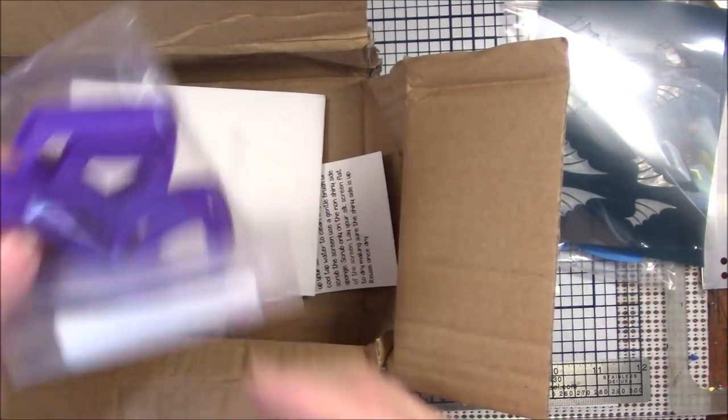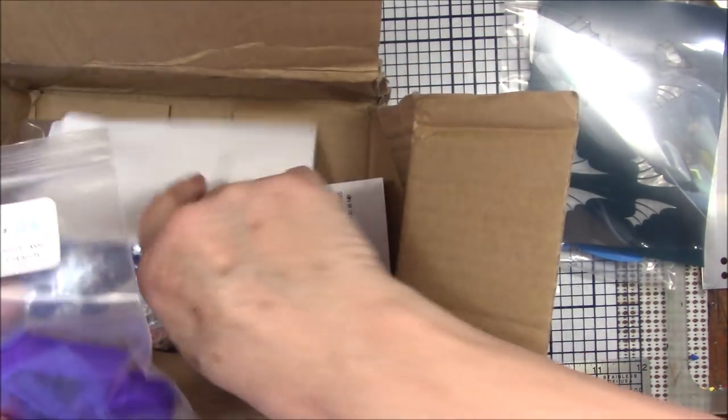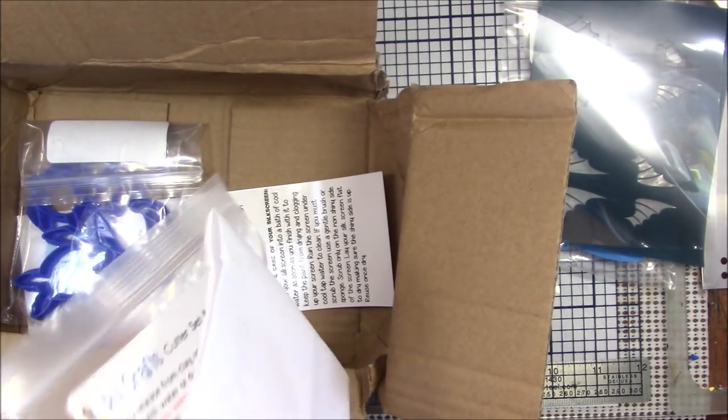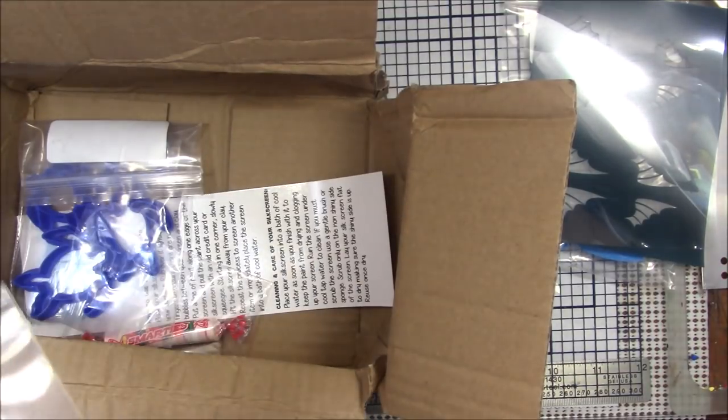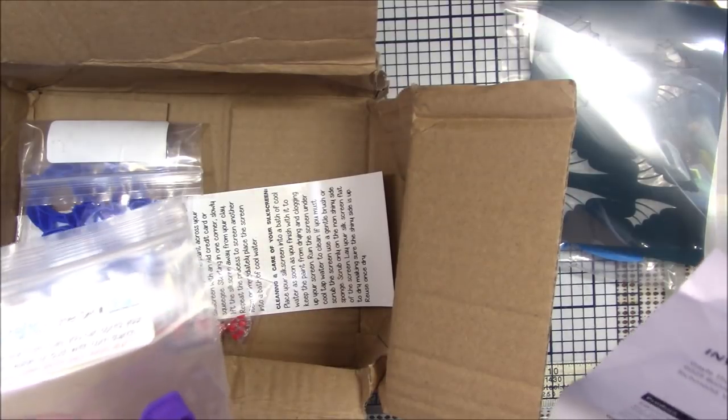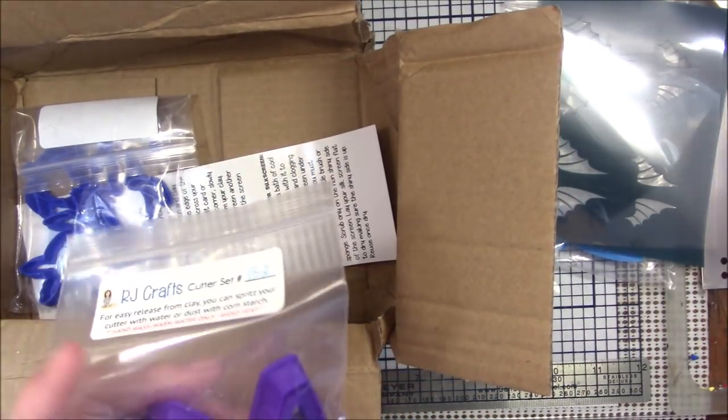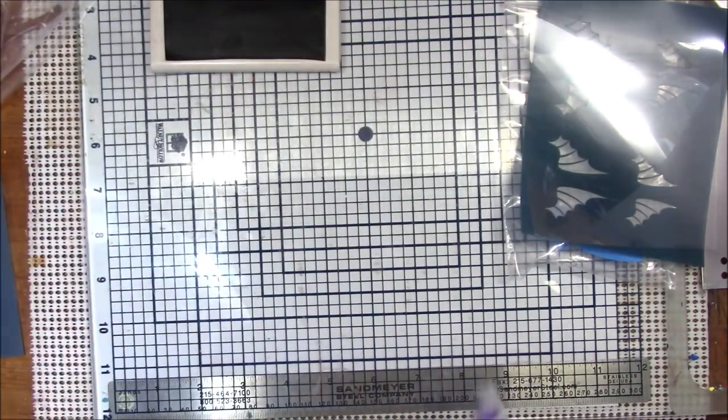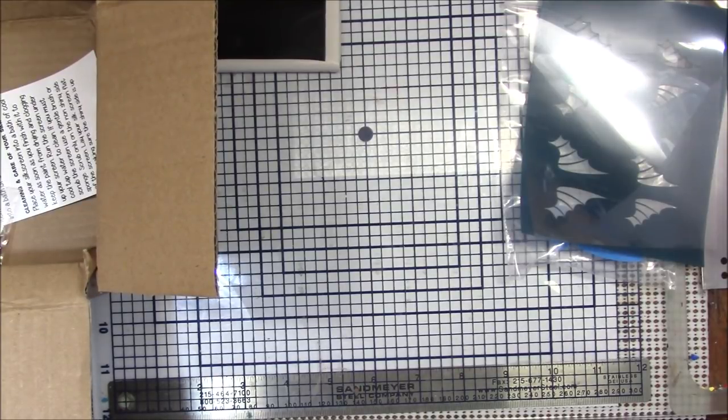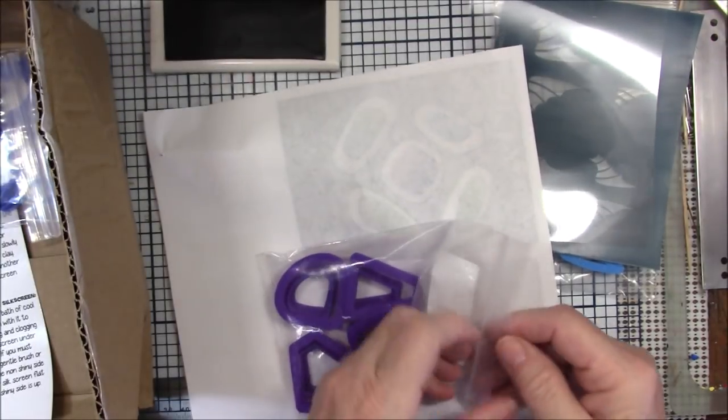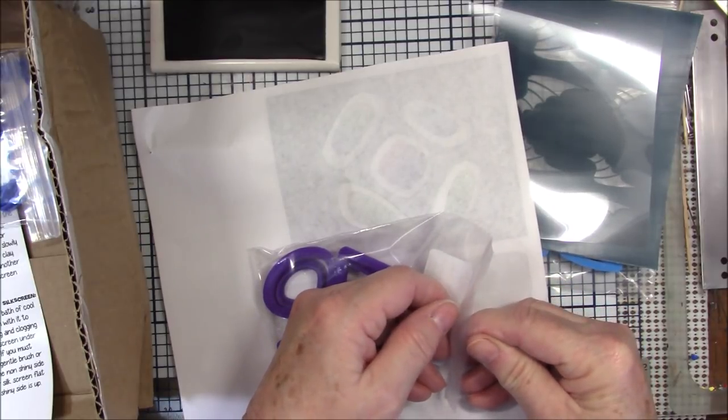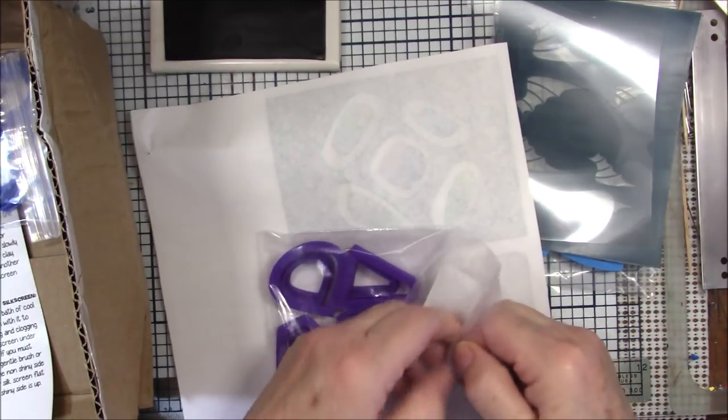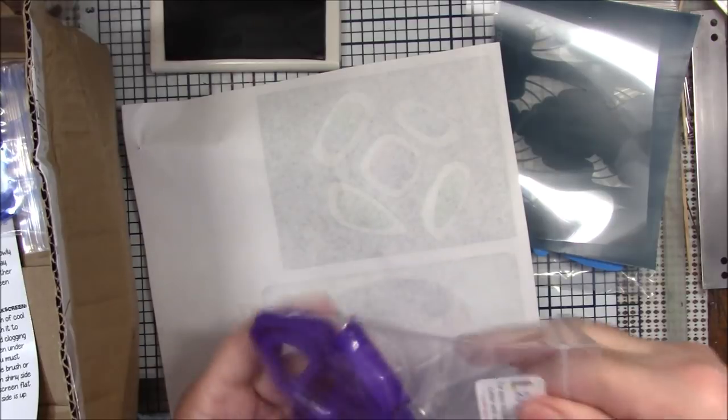And then I got this cutter set number 152 which is I believe one of Allison Merritt's cutters. Let me get my sheet out just to make sure. These are different, let me get them out first. Let me get a white piece of paper or something so you can see what they look like. But these are earring cutters and, well I say that, they can be used for anything but they're different shapes.